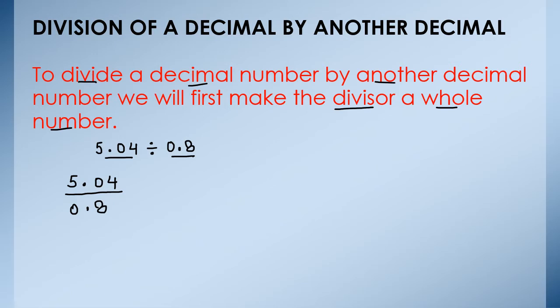Now we have to remove this decimal. As we can see in the divisor, there is one place after decimal. So to remove this decimal, we have to multiply the divisor by 10, because when we multiply this divisor by 10, this decimal will shift one place to the right side and after that it will be eliminated as there is no other digit. Now if we are multiplying the denominator by 10, that means we have to multiply the numerator also by 10. Then it will be an equivalent fraction.